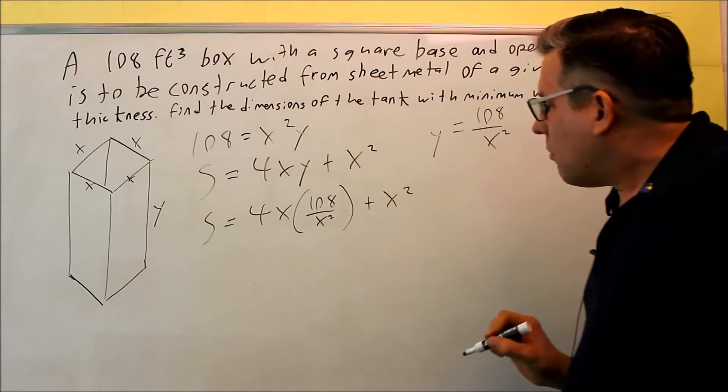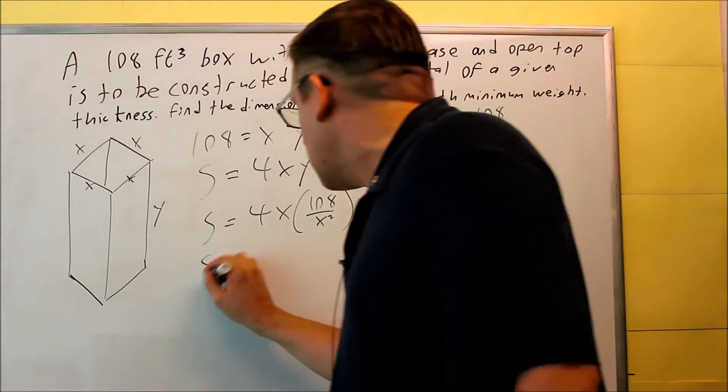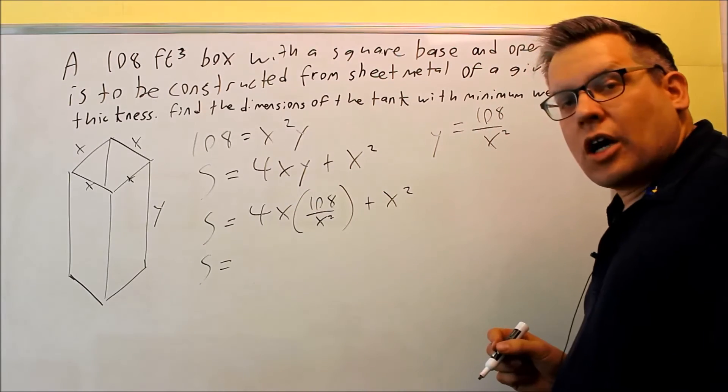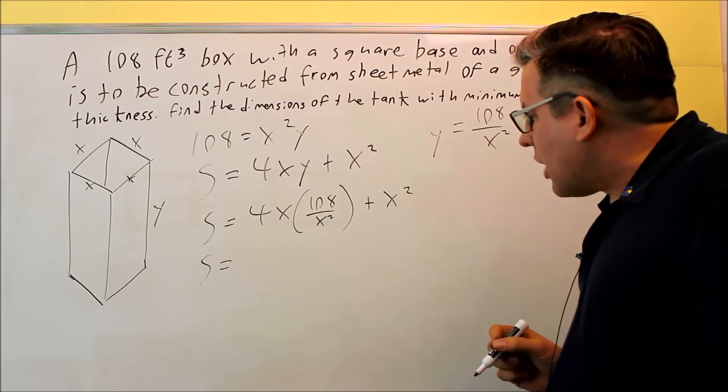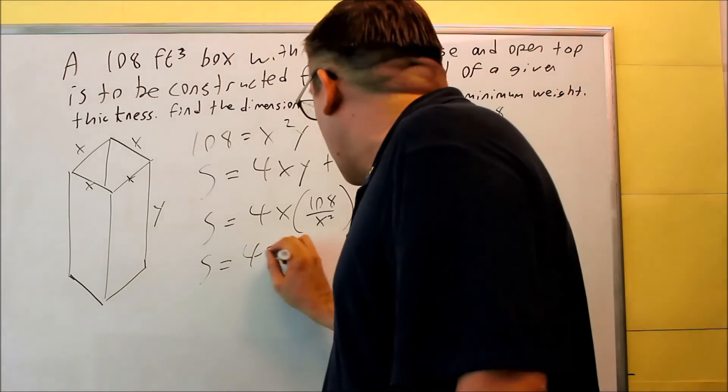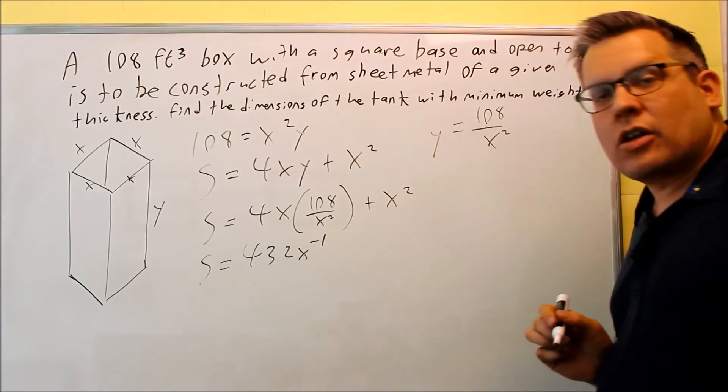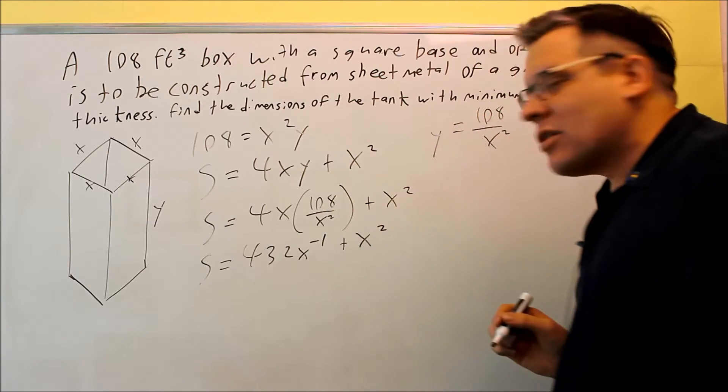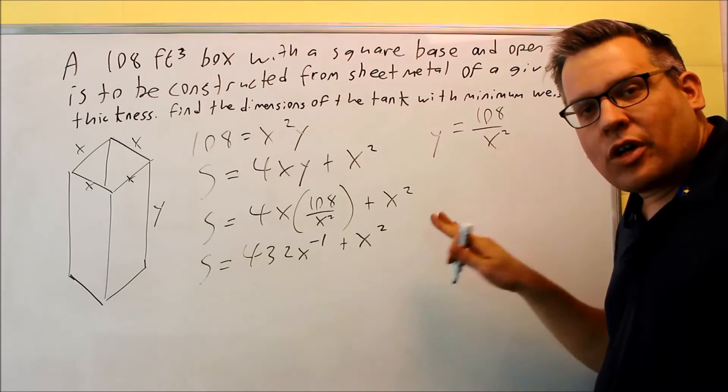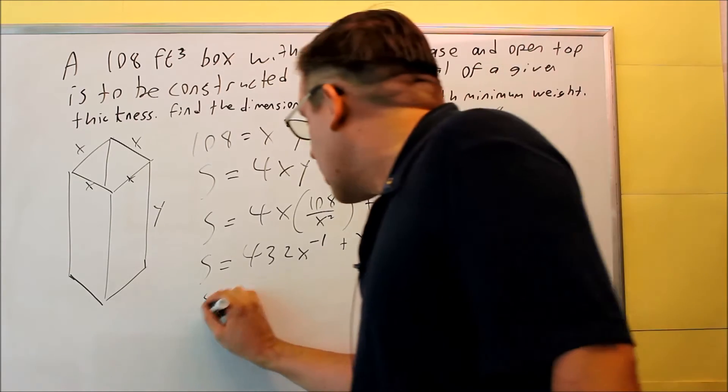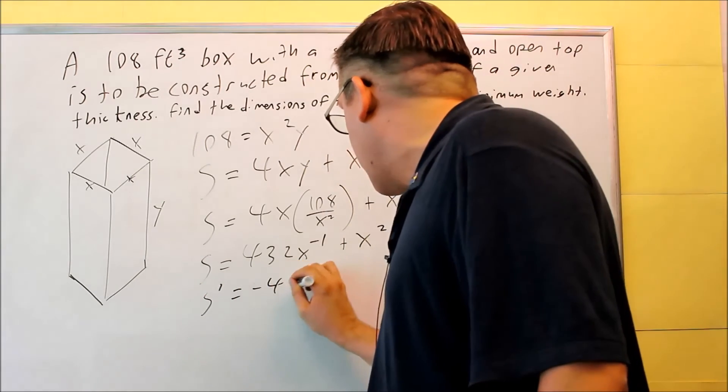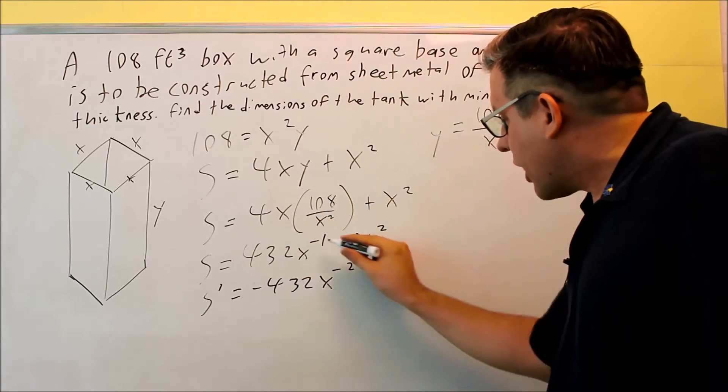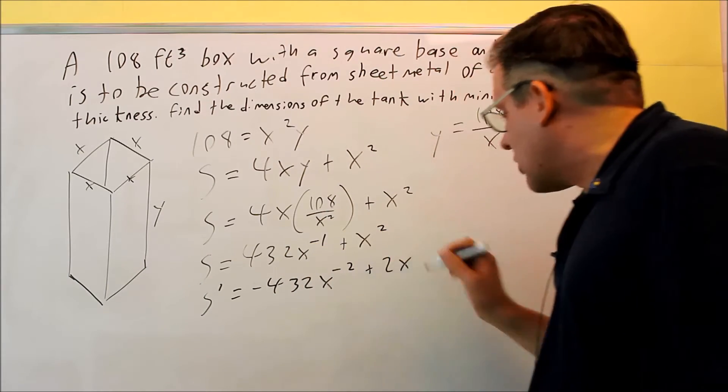Now, when I multiply this, I'm going to get some X's to cancel out. And so then I'll have 4 times 108, and when I multiply that, that's going to be 432, and that's going to be X to the negative 1 when I subtract those, and then I get this as my main equation. So I want to take the derivative of both sides here. So S prime is equal to negative 432X to the negative 2, bring the power down, subtract 1, and then I have plus 2X.